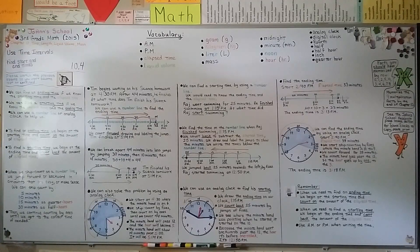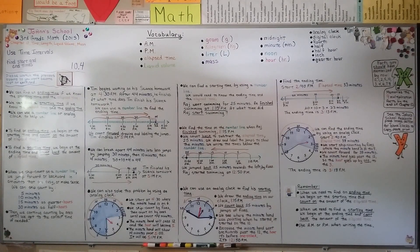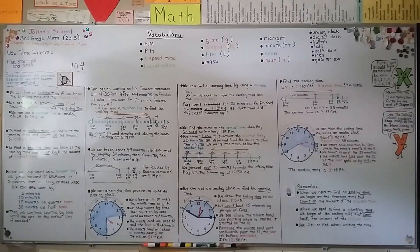Lesson 10.5 will cover word problems with elapsed time — it's the last lesson in this playlist about time. Remember: when using a number line with a known start time, go forward to the right as you count the elapsed time. When finding a starting time, start on the right-hand side of the number line and count back the elapsed time. I hope you're having a wonderful day — take good care of yourself, and I'll see you next time. Don't forget to hit the like button — it helps keep my videos at the top of the YouTube list.